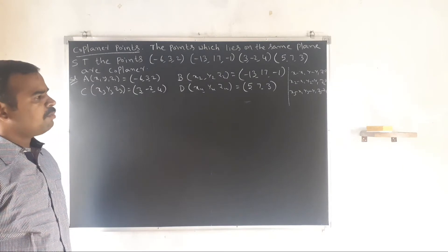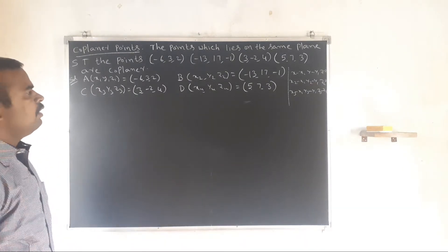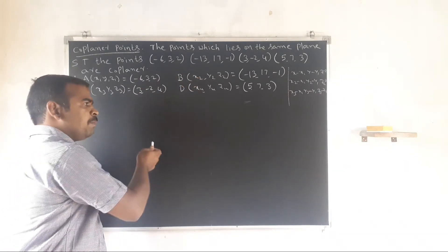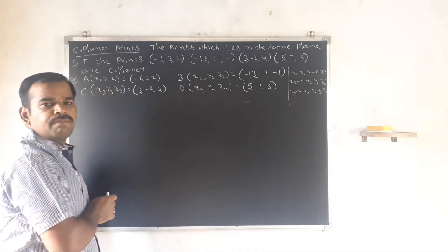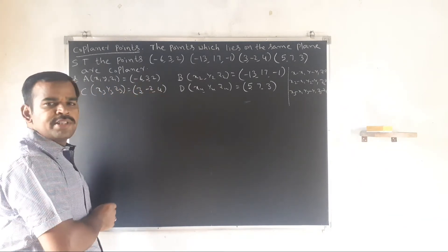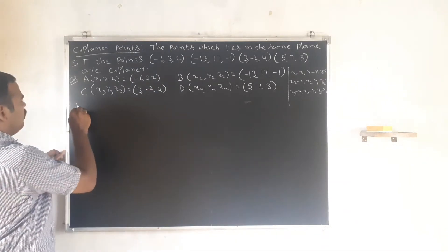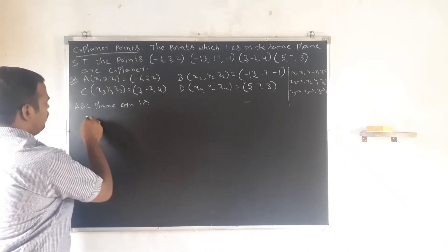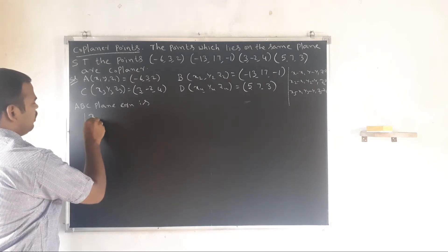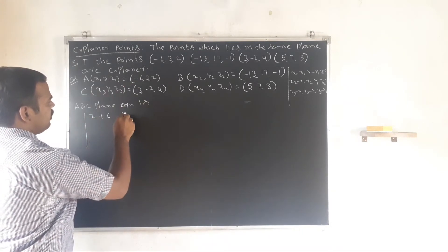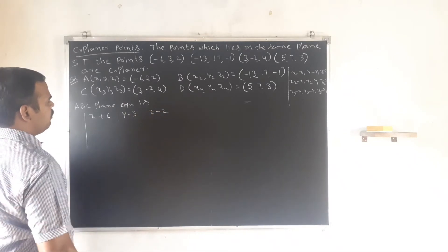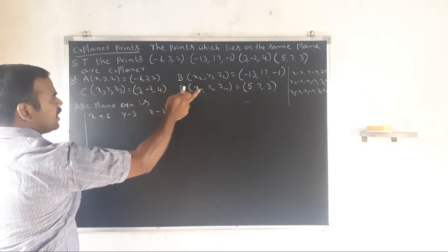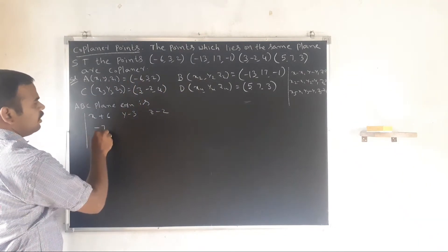We find the ABC plane equation. Substituting: first row is (x plus 6, y minus 3, z minus 2). Second row: x2 minus x1 equals -13 minus (-6) equals -7. y2 minus y1 equals 17 minus 3 equals 14.